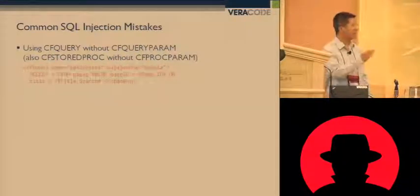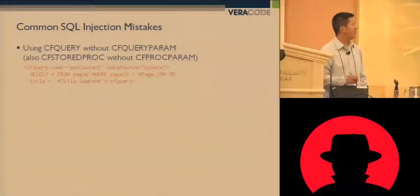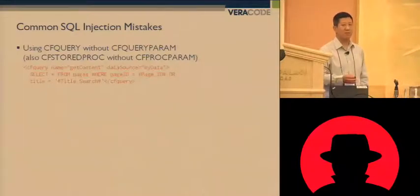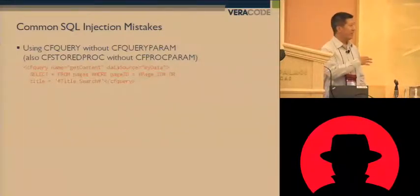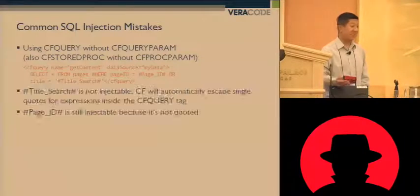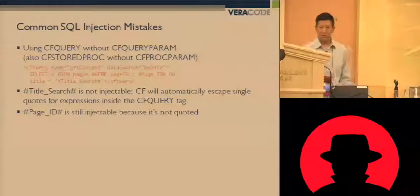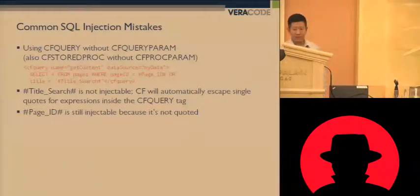Let's look at the parts of the query. Page ID is populated by the variable called page ID, and title search is populated by the variable on the page called title search. Once those variables are populated, the query is then sent to the database and executed. Pretty self-explanatory.